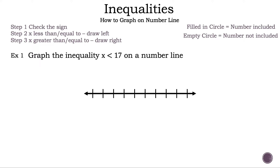Now let's read the question: Graph the inequality x less than 17 on a number line. Before we get started, let's look at the top right. We have a filled-in circle, or closed circle, which means the number is included in the answer — that is for less than or equal to, or greater than or equal to. And we have an empty circle, or open circle, which means the number is not included in the answer — that is for less than or greater than.